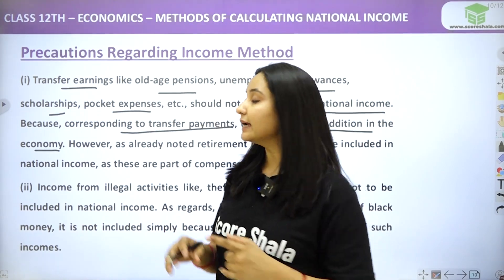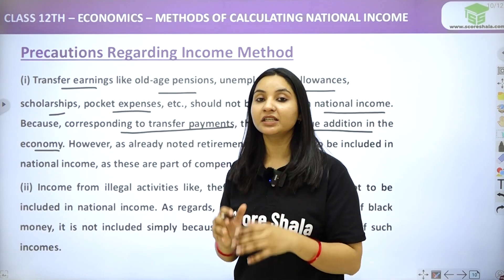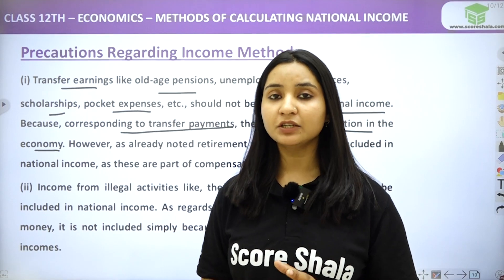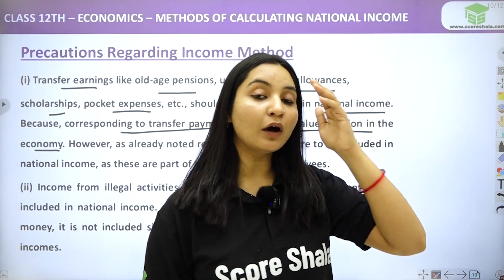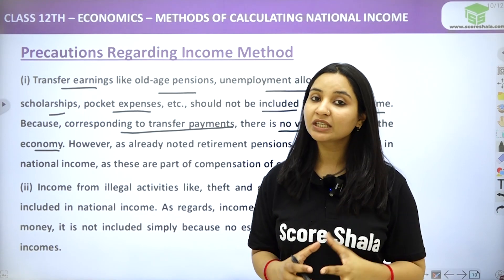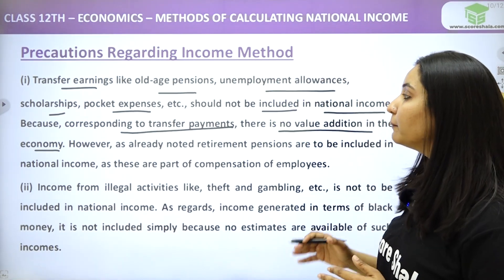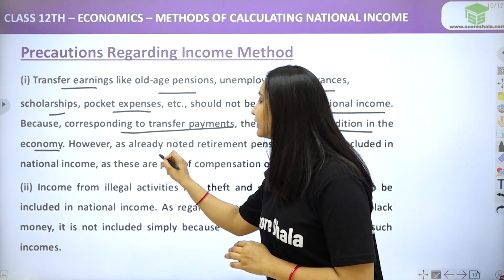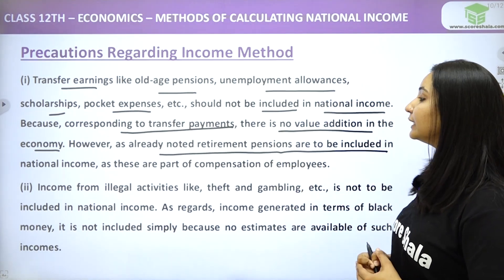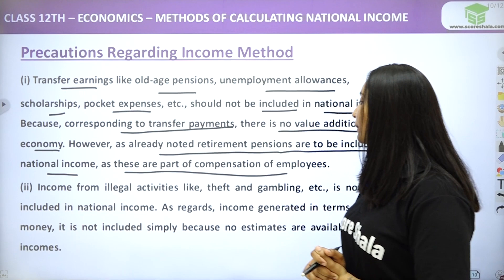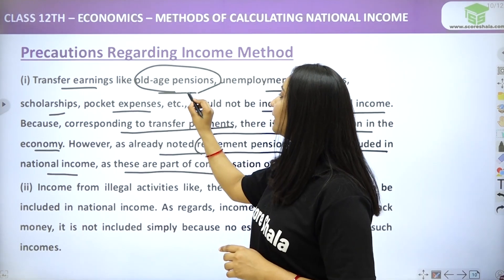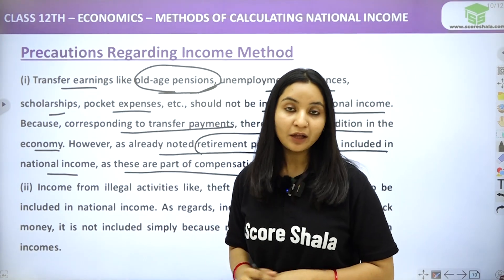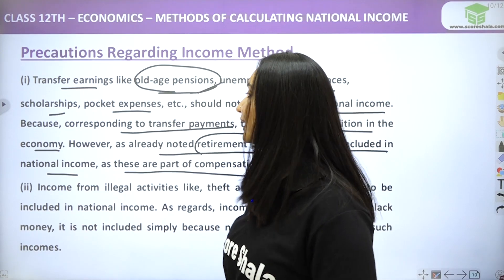Why are they not included? Because corresponding to transfer payments, there is no value addition in the economy. For example, unemployment allowance has no value addition. However, retirement pensions are to be included in national income, as these are part of the compensation of employees. So don't be confused — retirement pension is included, but old age pension is not.